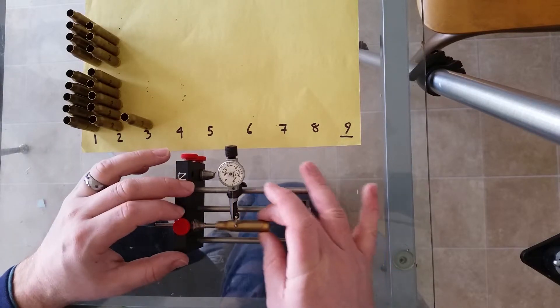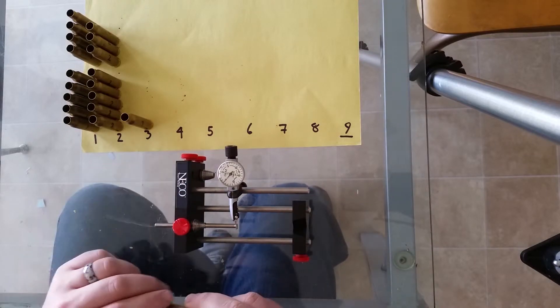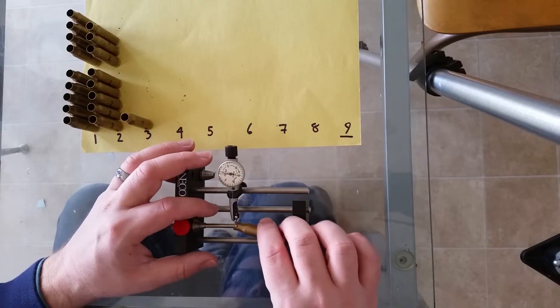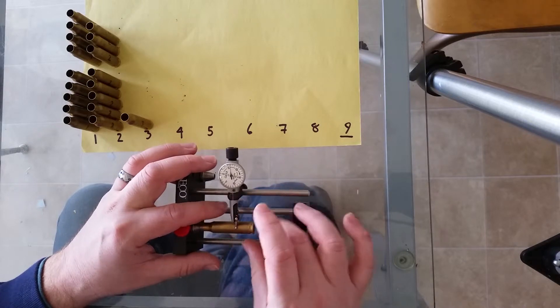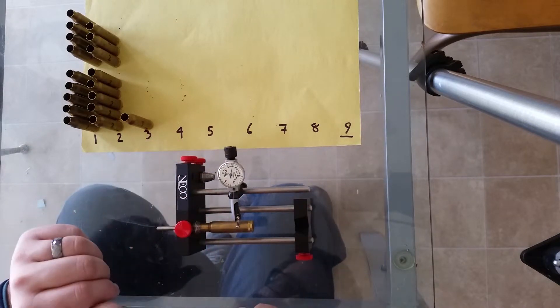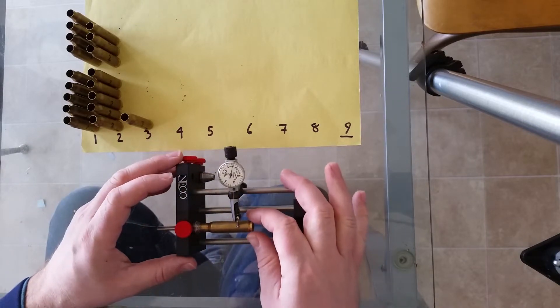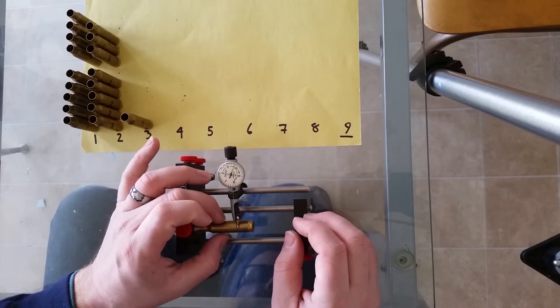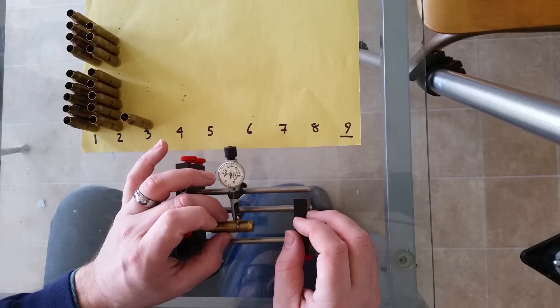Basically, you have a little anvil here and the indicator goes on there, and you're checking total indicator runout. Case mouth goes on appropriate sized pieces there, and then you just gently spin it around.